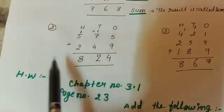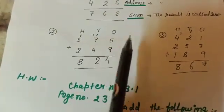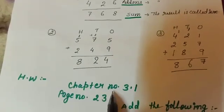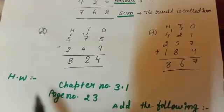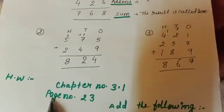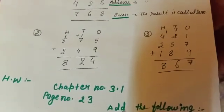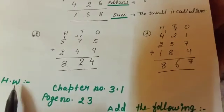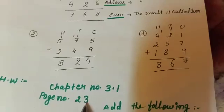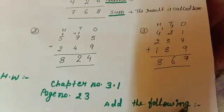Students, I hope from this explanation you can do three-digit addition very easily. Come to chapter number 3.1 homework. Chapter number 3.1, page number 23, add the following. Thank you.